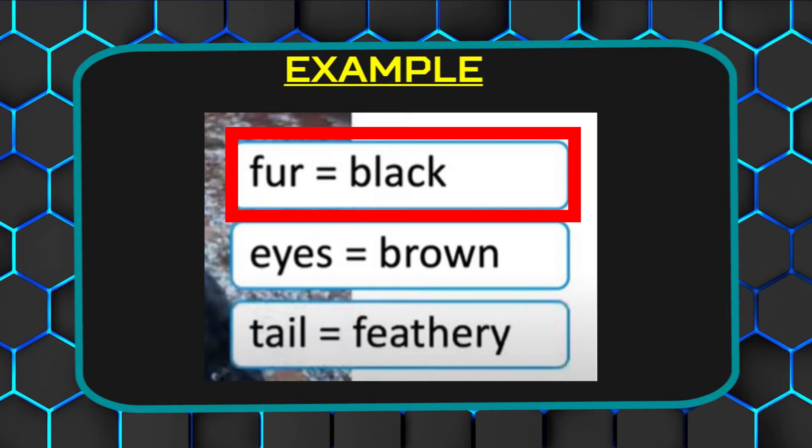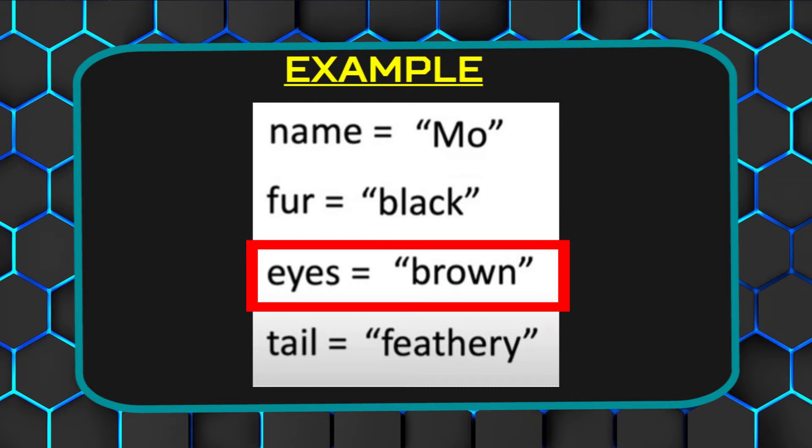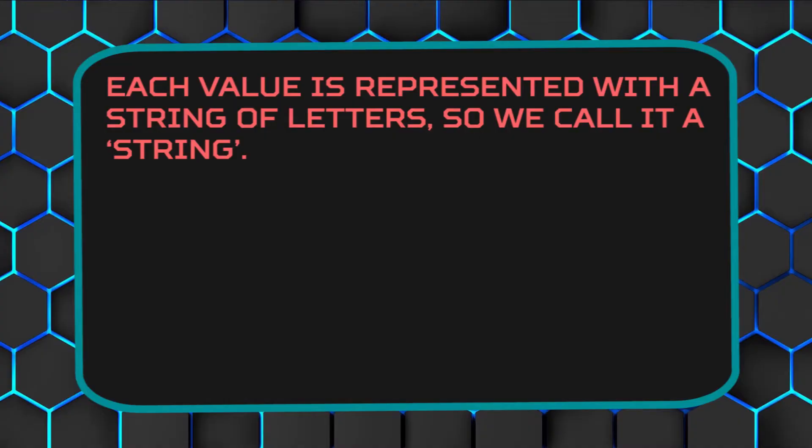For example, let's say you have a black dog named Mo. Mo has three distinct features: number 1, his fur is black; number 2, eyes brown; number 3, tail feathery. He also has a name, of course. Now, let's say you want to turn Mo into a character from a video game. All of these values that describe Mo will be written out in code. So, we have name Mo, fur black, eyes brown, tail feathery. Each value is represented with a string of letters, so we call it a string.